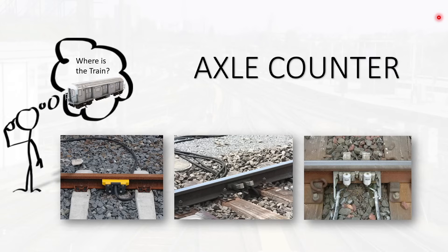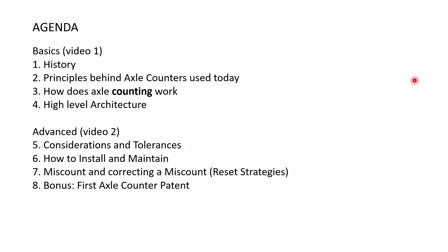Hello everyone, welcome to Rail Signaling Academy. Today we are starting a new series on train detection systems. While the old series on headway will continue, I will be starting different series in parallel just to keep the content diverse. The first train detection system I will talk about today is axle counters. We will be splitting this video into two parts — today's video will cover basics: history of axle counters, principles behind axle counters used today, how axle counting works, and a high-level architecture.